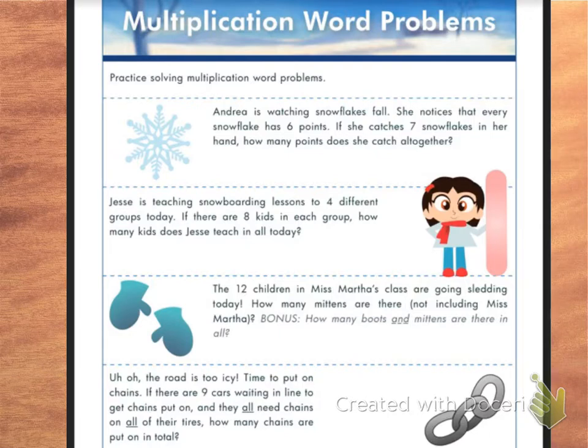All right, for this next part, it says practice solving multiplication word problems. So basically, we're looking at word problems that have groups of numbers, so many groups. Andrea's watching snowflakes fall. She notices that every snowflake has six points. So you kind of have to visualize that, right? She's seeing these and everyone has six points. If she catches seven of these snowflakes with six points each in her hand, how many points does she catch all together?